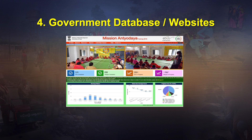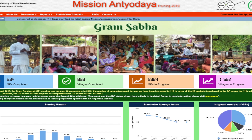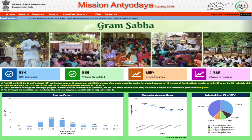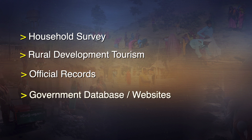The fourth source is government databases and websites. For example, you have the Ministry of Rural Development, Ministry of Panchayatiraj, and Ministry of Agriculture — they all have their databases. The one shown in the slide is an important source of data that can be used for obtaining information. So, we have four ways of collecting data: house-to-house survey, rural development tourism, official records, or websites.